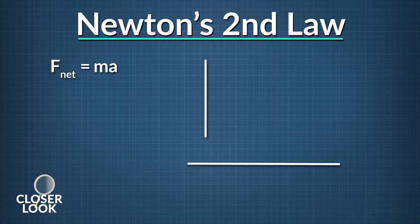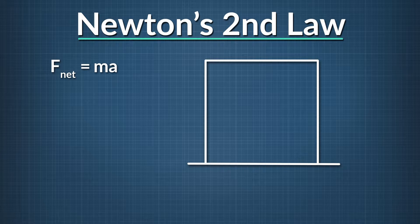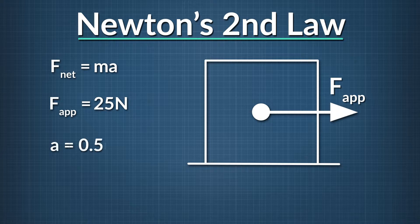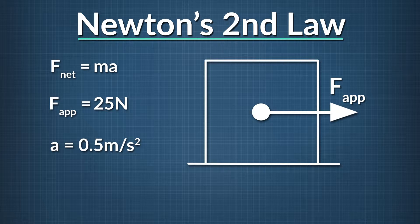Walking through a warehouse, you see a box on the floor. You decide to give it a push using a force of 25 Newtons in the horizontal direction. If the box accelerates at 0.5 meters per second squared under this force, what is the mass of the box?